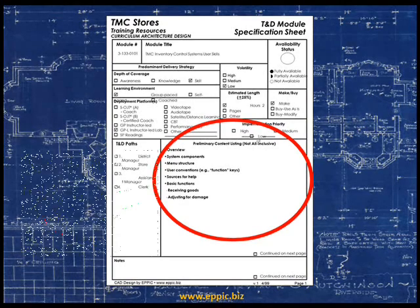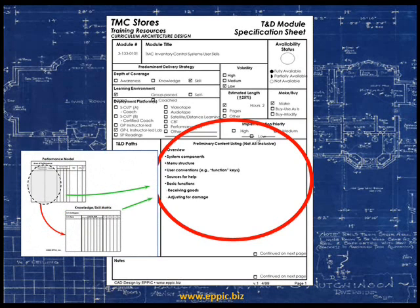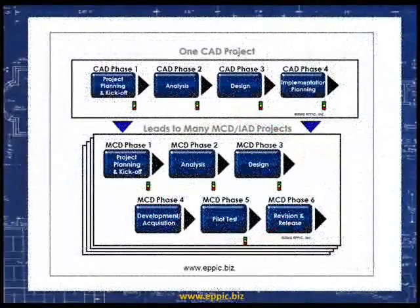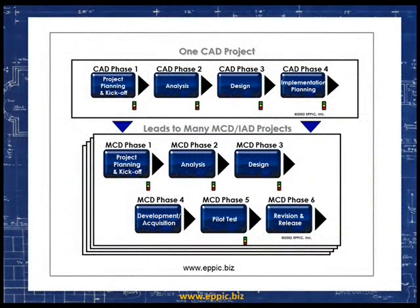What feeds this portion of the module spec is all of the analysis data — the performance model data and the enabling knowledge and skills matrices data. A curriculum architecture design project does not produce any new content. It simply identifies the need, rationalizes existing available content as to its ability to be used as-is or after modification, or determines it is not appropriate to this particular need.